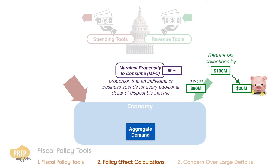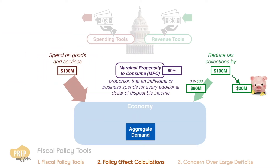In contrast, when the government spends $100 million on goods and services, the entire $100 million goes into the economy.